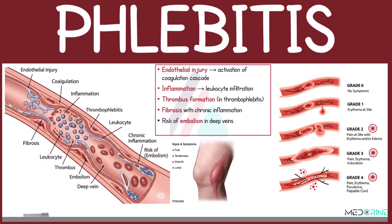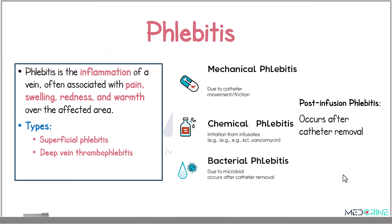Welcome to this presentation on phlebitis. Phlebitis is defined as an inflammation of a vein, typically presenting with pain, swelling, redness, and warmth over the affected area. It can be superficial or deeper in the venous system, known as deep venous thrombophlebitis.